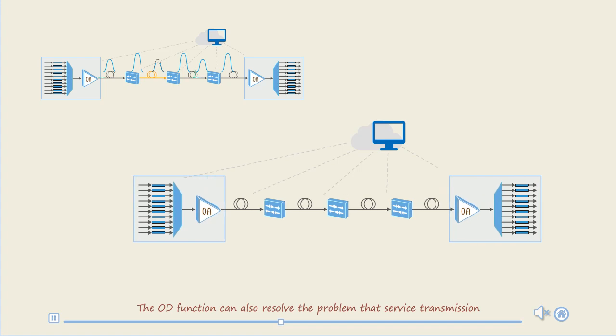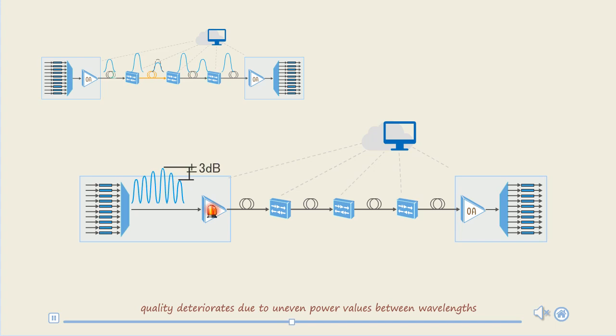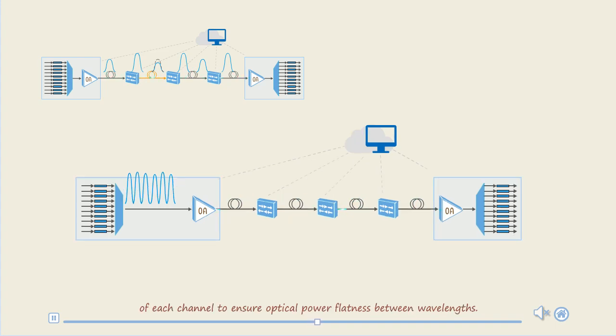The OD function can also resolve the problem that service transmission quality deteriorated due to uneven power values between wavelengths caused by per-channel optical power changes. The OD function can automatically detect and adjust the optical power of each channel to ensure optical power flatness between wavelengths.